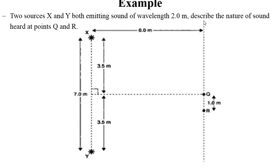The question here is, describe the nature of the sound heard at point Q and R, having it in mind that the wavelength of the emitted sound is 2.0 meters.